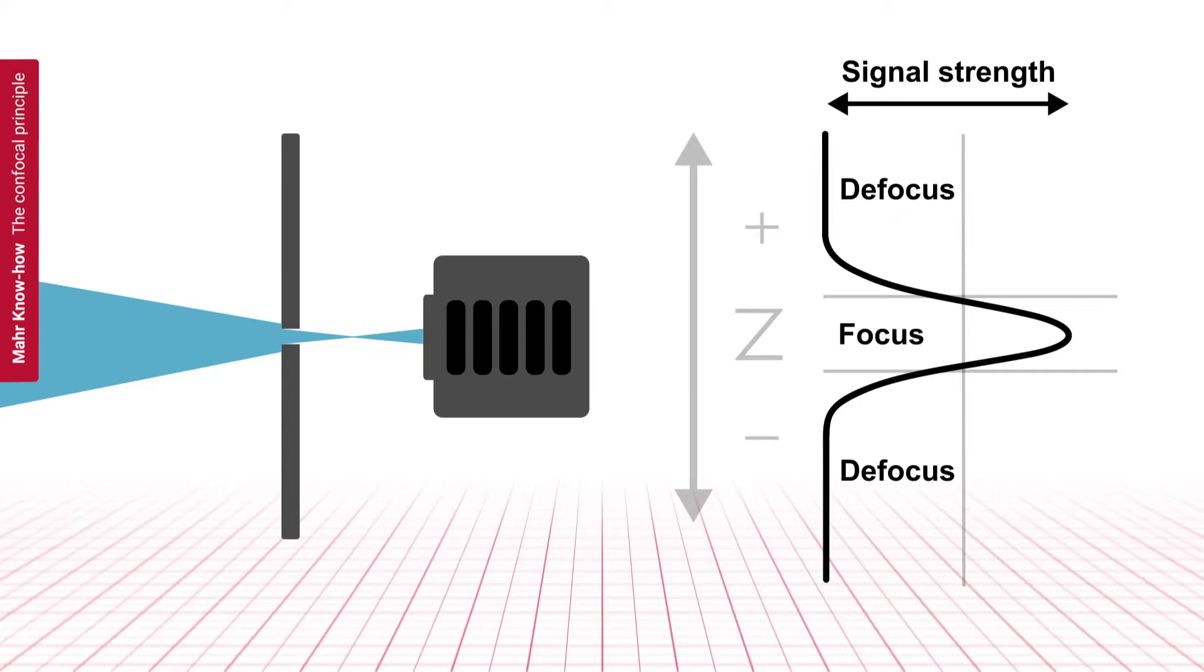Hereby, the intensity at the detector is reduced with increased defocusing. Light scattered outside the focal plane is physically masked by this arrangement.